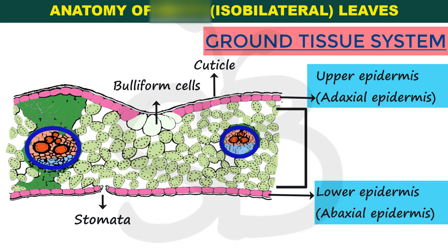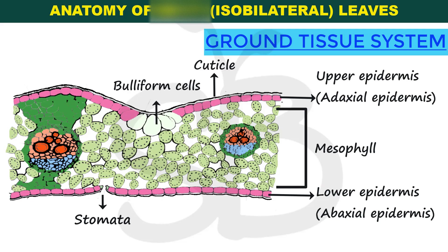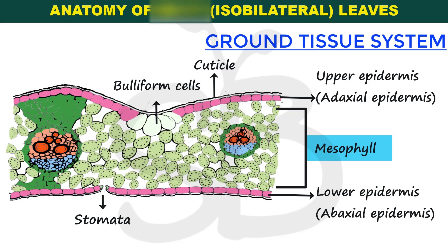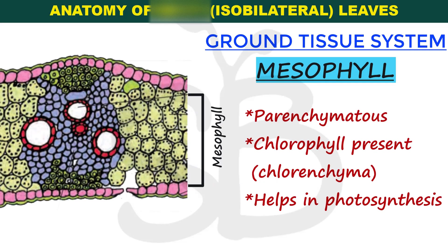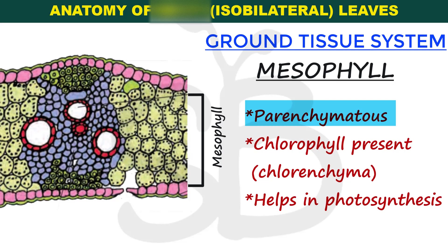In the ground tissue system, unlike the root and stem which have hypodermis, pith, endodermis, etc., in the leaf we have only one type of ground tissue cells. This is the mesophyll cells, which are parenchyma cells that contain chlorophyll.